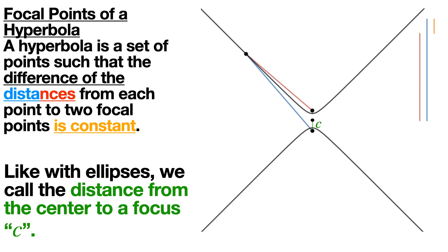A hyperbola can be thought of as a set of points such that the difference of the distances from every point in the hyperbola to two focal points is constant. What does this mean? It means that look at the point on the hyperbola and the two distances — the red distance and the blue distance — from the two focal points to the point. When you subtract them the difference will always be the same, and you can see the animation as follows.